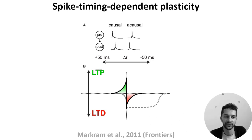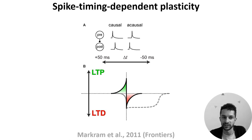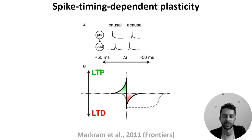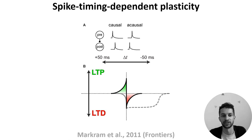That potentiation is shown in green, while if it's acausal — in other words, pre tends to follow post — the strength will be decreased, shown in red. This is known as spike timing dependent plasticity, and it tends to induce long-term changes in synaptic strength via processes known as long-term potentiation (LTP) and long-term depression (LTD).